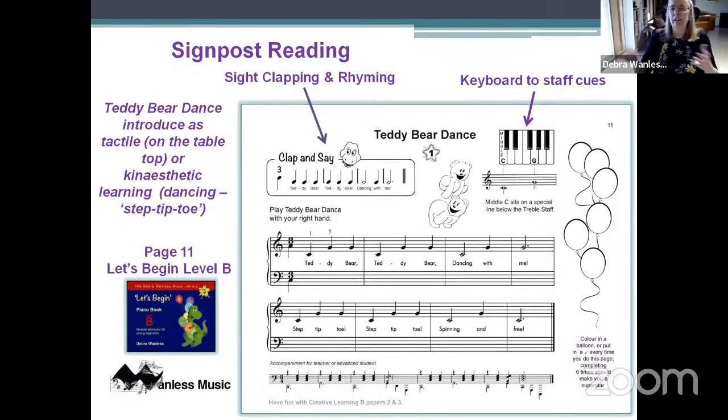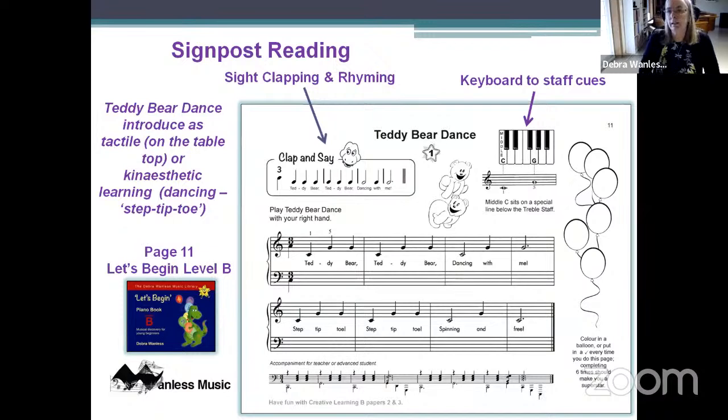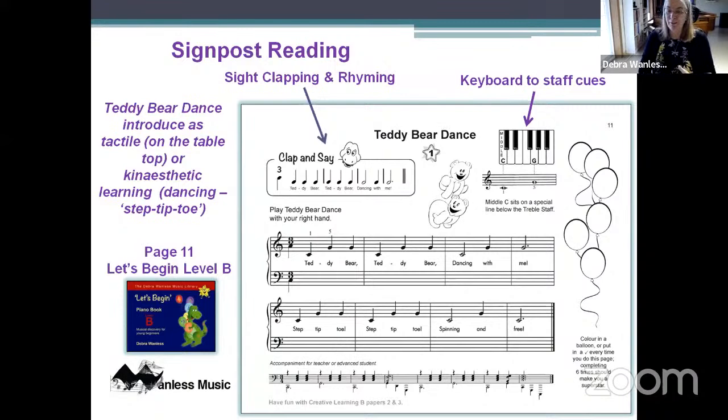Pages in the B book look very similar to A. We start with signpost reading as review, still have sight reading like clapping games and rhyming, and lots of keyboard-to-staff cues. The balloons are still there, still black and white. We haven't done much triple meter because it's one of the most difficult meters for children — our heart isn't in triple meter, we walk with two feet, our whole body rhythm is duple or quadruple.